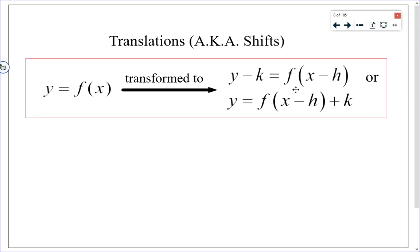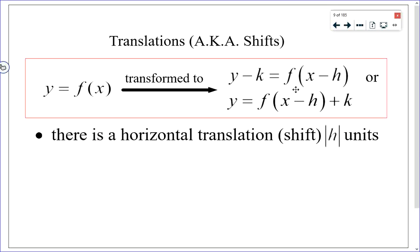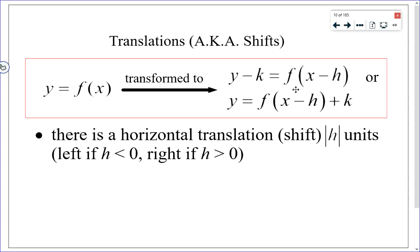We typically write y equals f(x minus h) plus k. The parameter h is responsible for a horizontal translation. The absolute value of h tells you how far the horizontal translation is. If h is negative, the graph shifts in the negative direction, which is to the left. If h is positive, you have a shift horizontally in the positive direction, which is to the right.